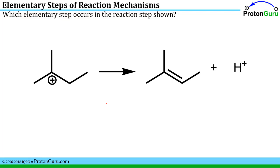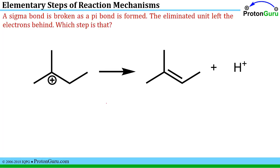Now let's take a look at this. If you pause the video, you can figure out what's happening in this case. If you think about this and look at the hydrogens that are not necessarily drawn for you in a line bond formula, you'll see that one of these hydrogens is coming off, leaving the two electrons behind as a pi bond, and you have a proton coming off as a result. So a sigma bond is broken, a pi bond is formed at the same time, and the unit that's eliminated has left the electrons behind.